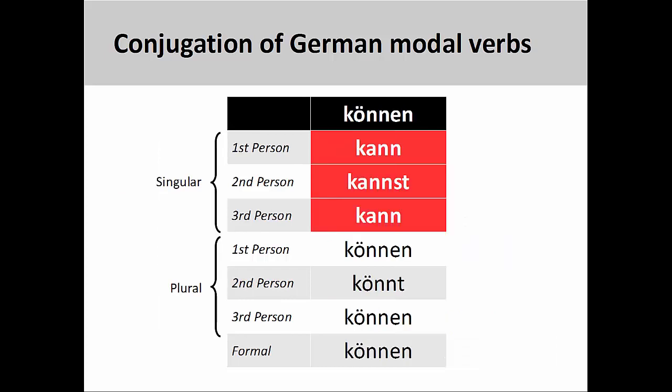Finally, the stem vowel in the modal verb können changes from ö to a in the singular, but goes back to ö in the plural. We will take a look at the different meanings of these modal verbs and how to use them in a sentence in a later presentation.